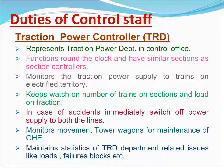The Traction Power Controller (TRD) represents the traction power department in the control office. Functions round the clock and has similar sections as the section controller. Monitors the traction power supply to trains on electrified territory. Keeps watch on number of trains on sections and load on traction. In case of accidents, immediately switches off power supply to both lines. Monitors movement of track machines for maintenance of OHE. Maintains statistics of TRD department related issues like loads, failure blocks, etc.